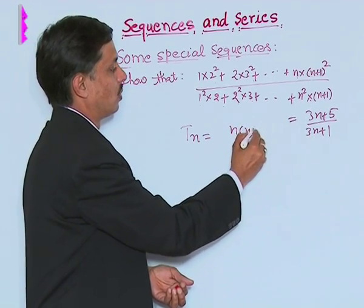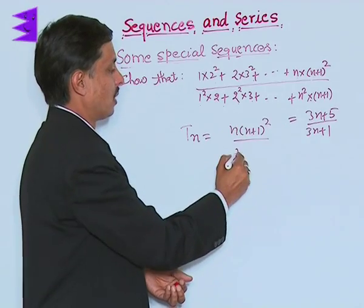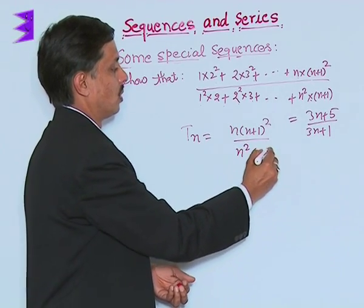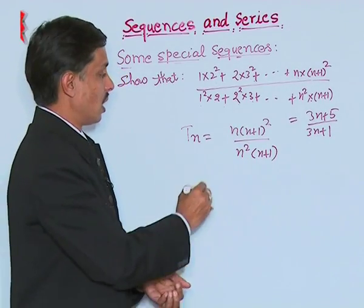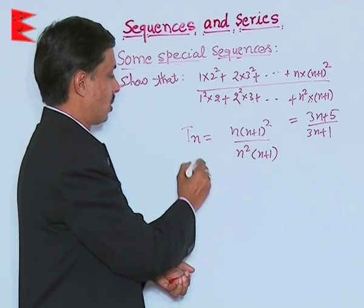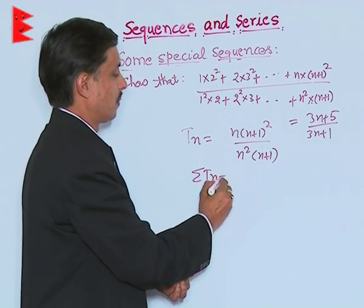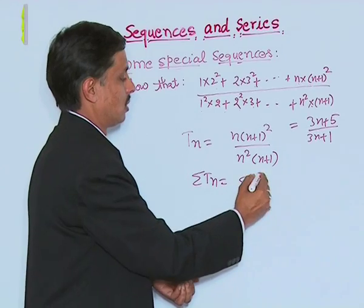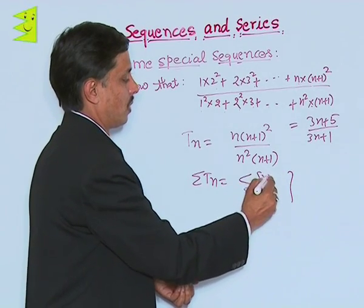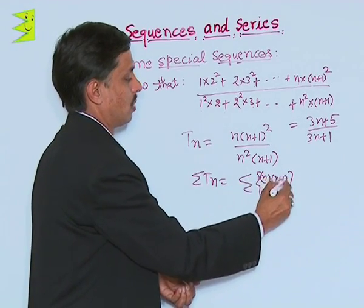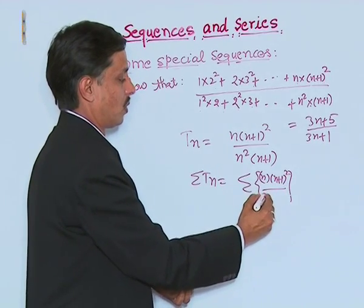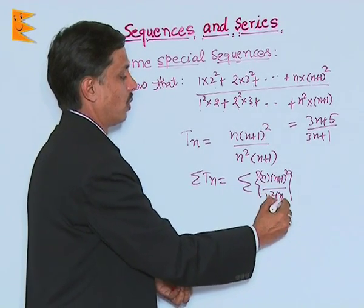It is n into n plus 1 whole square upon n square into n plus 1. And we will put sigma T_n that is what sigma of n into n into n plus 1 whole square upon n square into n plus 1.